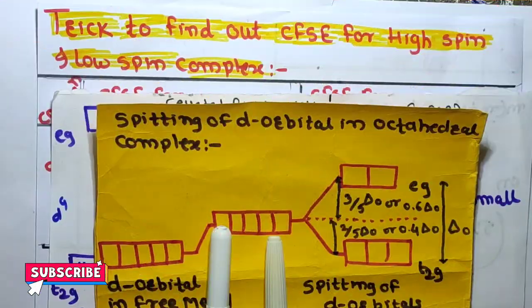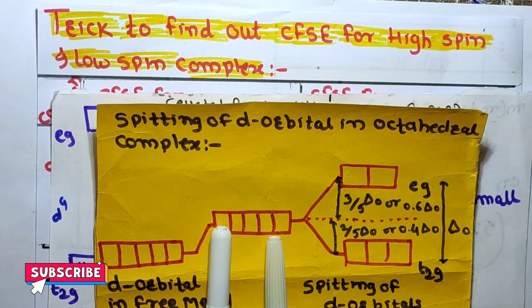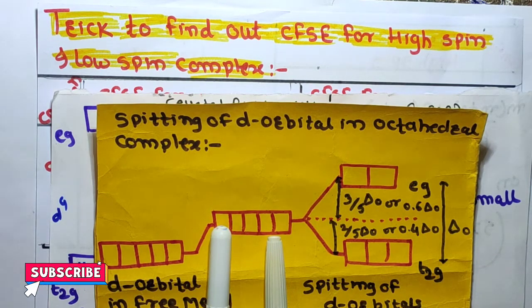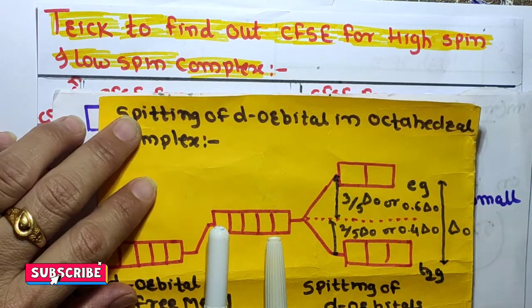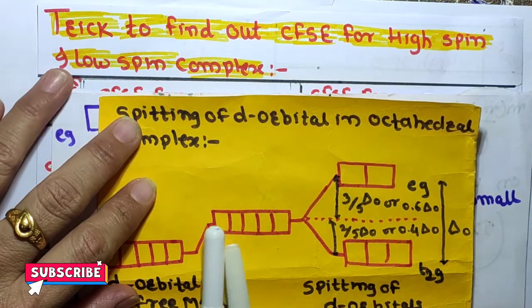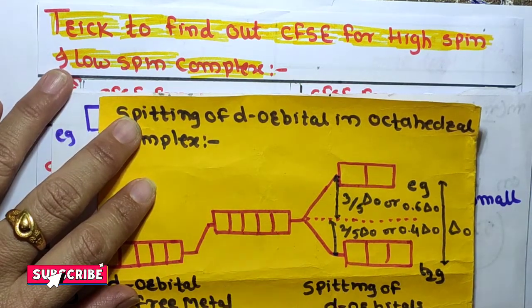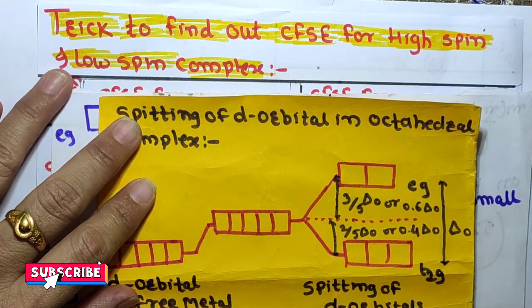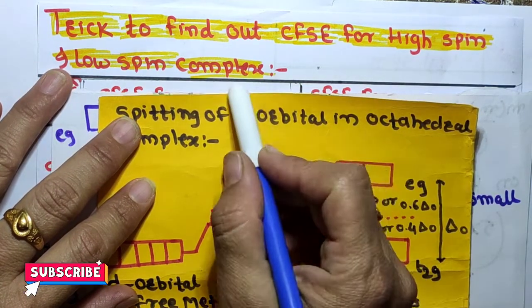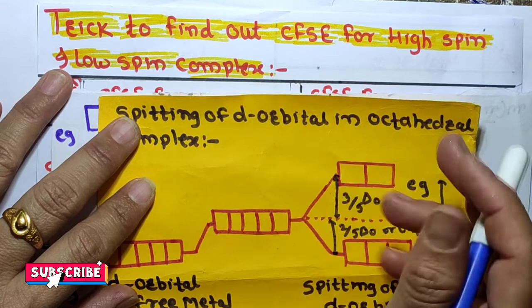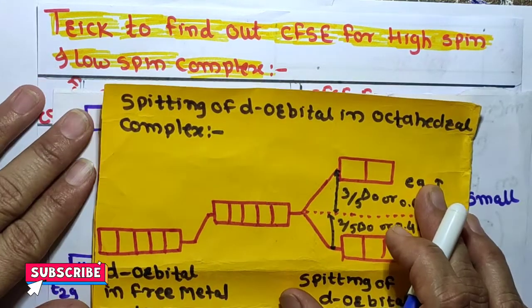Welcome to my channel. In this channel I will teach chemistry and maths in the simplest way. Today's topic is a trick to find out crystal field stabilization energy for high spin and low spin complexes.